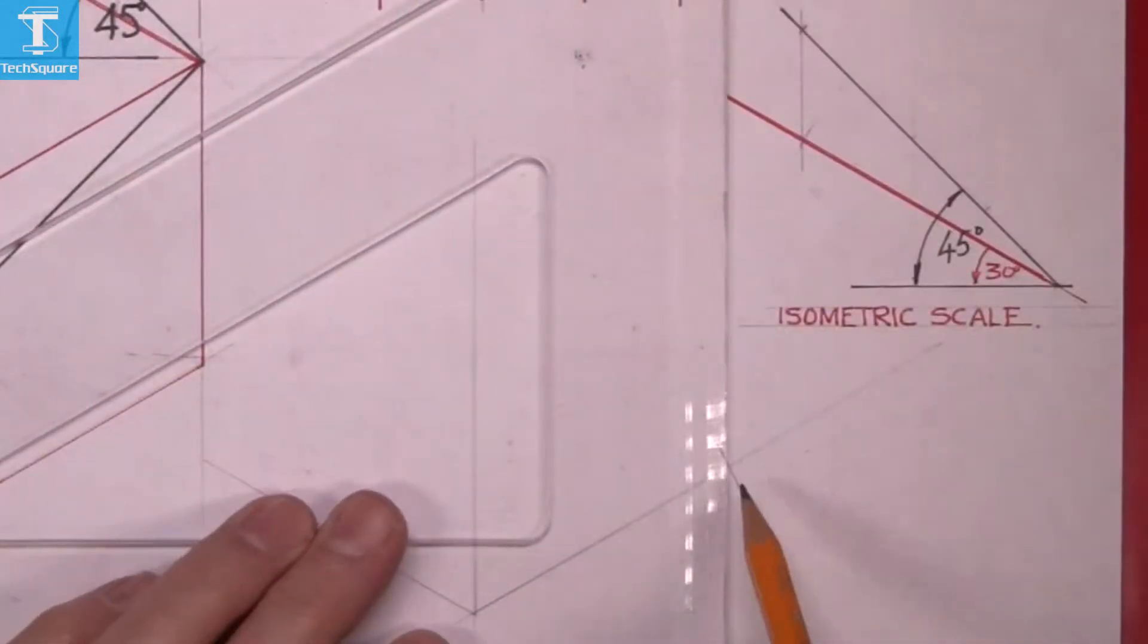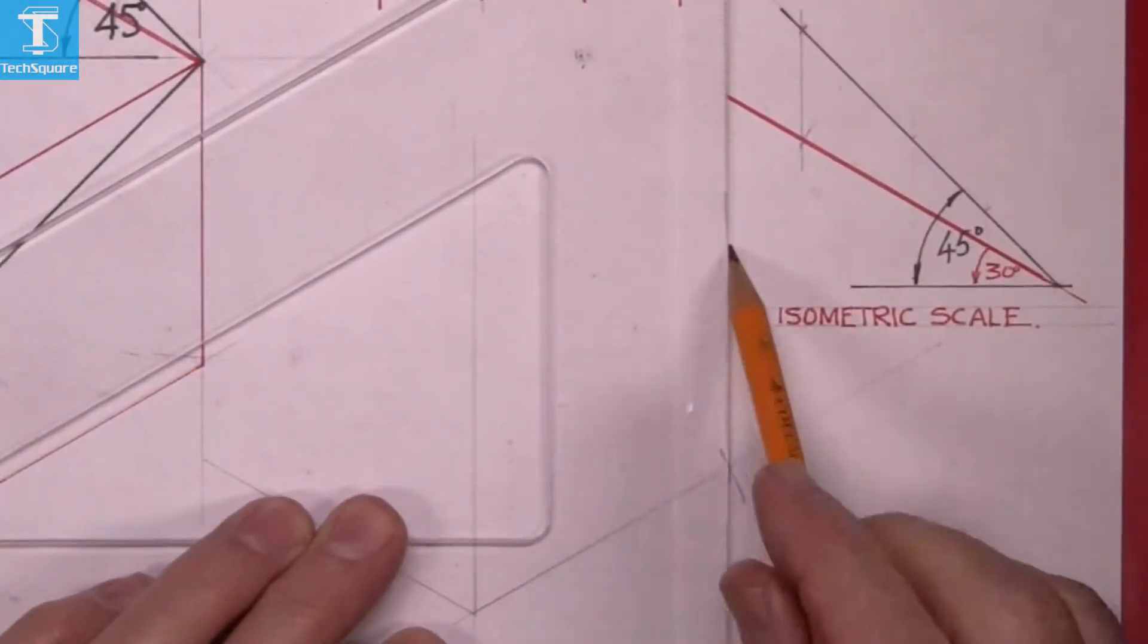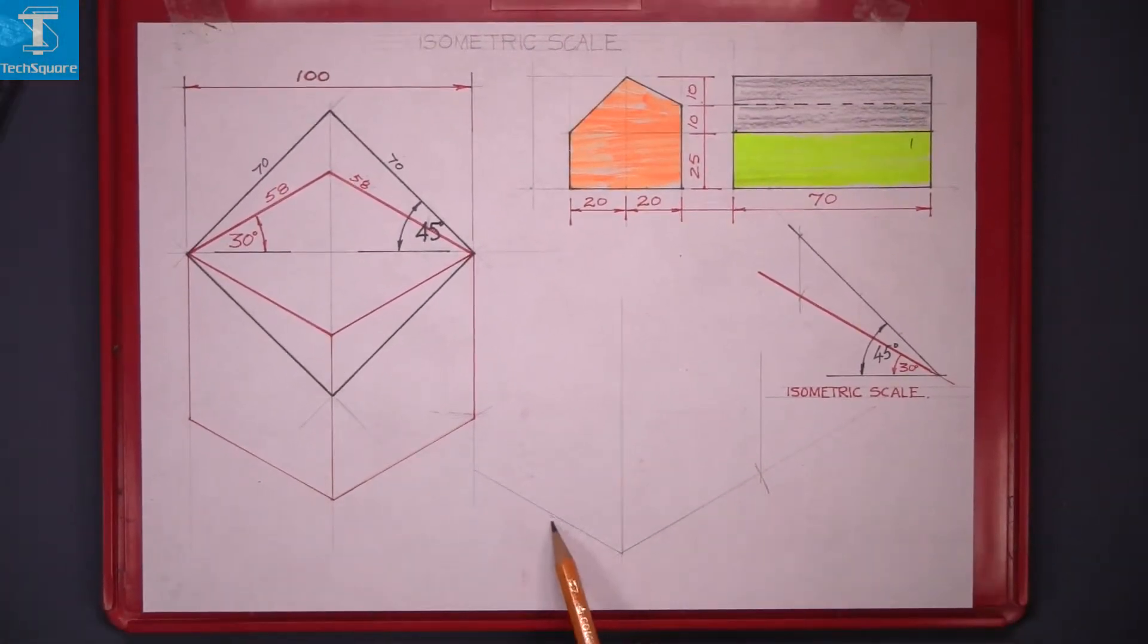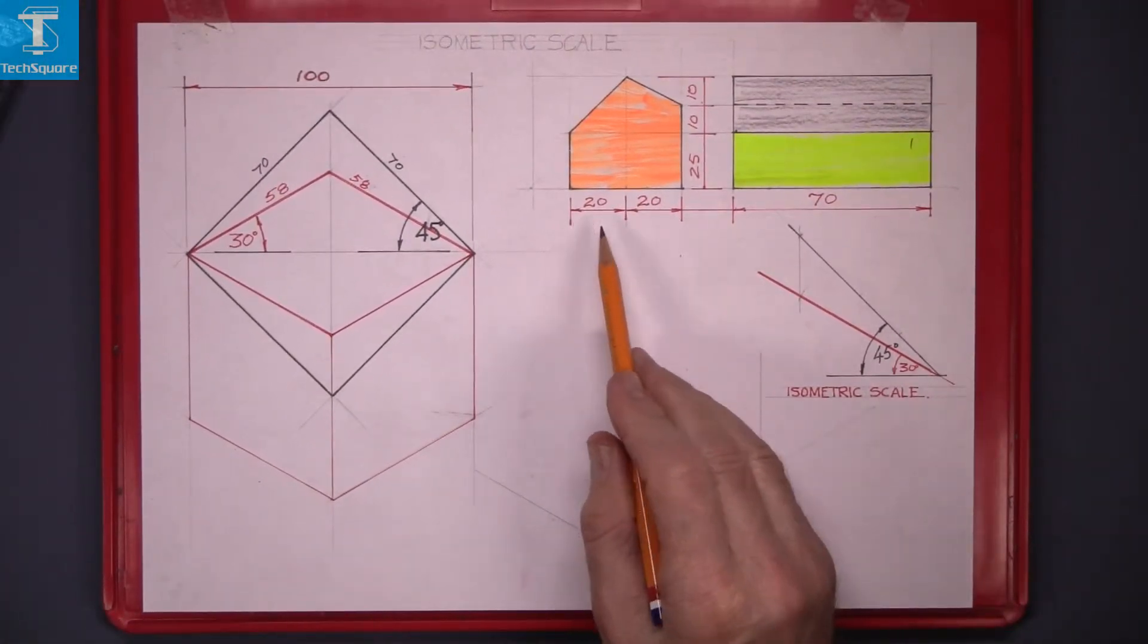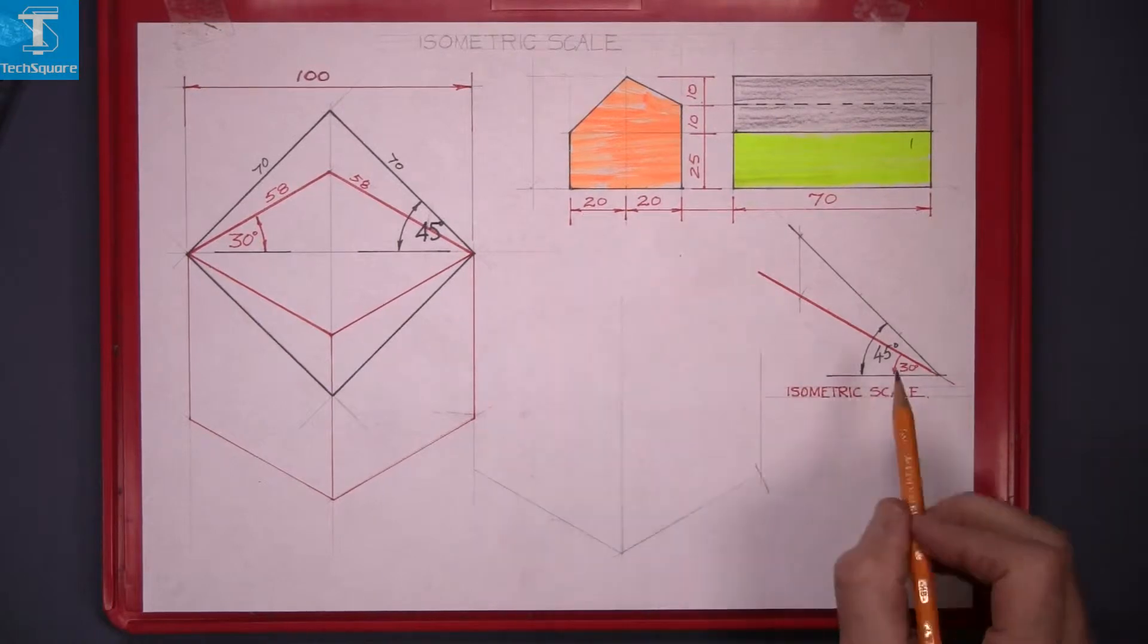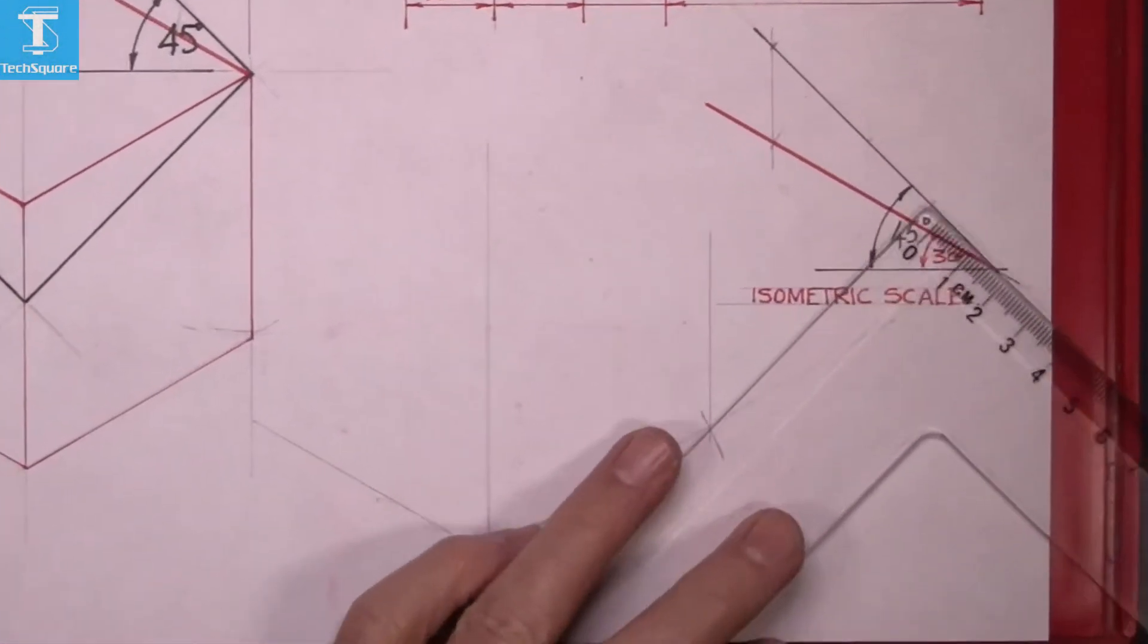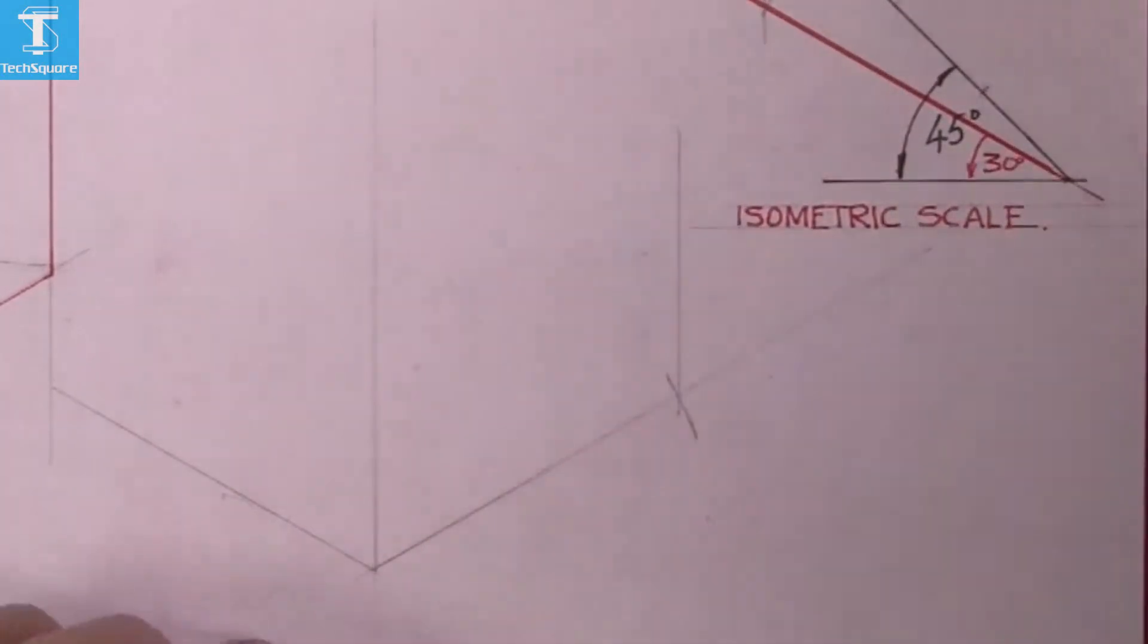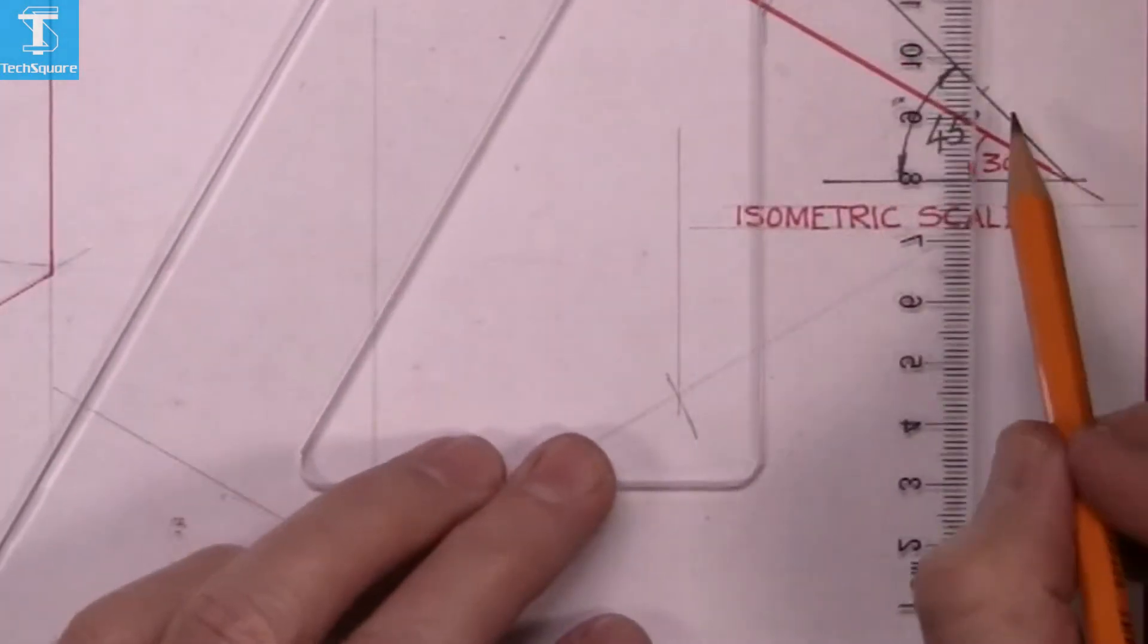The width of the house is 20 and 20. Measure up 20 on the 45 degree line, draw vertically down to the red line.